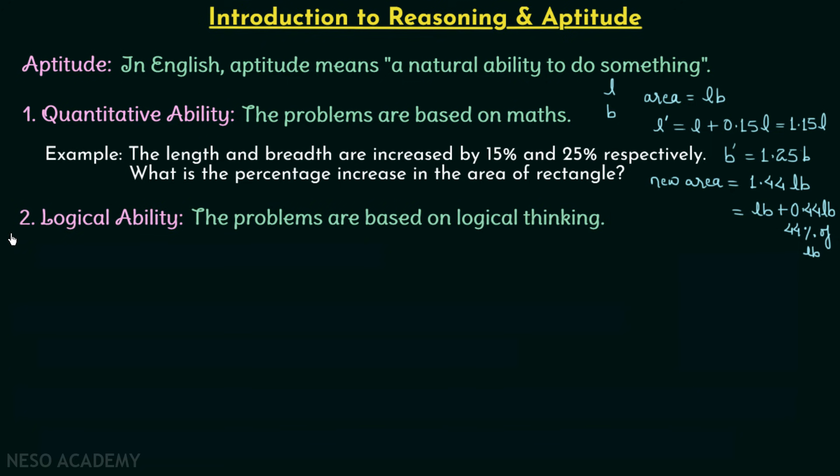Now moving on to our second class, which is Logical Ability. In this, the problems are based on logical thinking. For example, we have these five numbers given and we need to find the sixth number. To find the sixth number we can use our logical thinking. The first thing we notice is that 2 is our first number, 12 is our second number, 36 is third number, 80 is fourth, 150 is our fifth number.